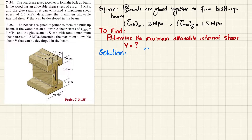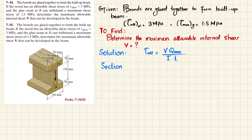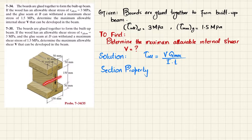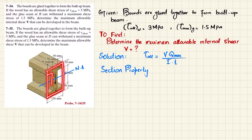Let's start with the solution. The allowable shearing stress formula is τ = VQ_max / (I·t). We will first find the section property I for this beam. The beam is symmetrical about the horizontal axis at mid, so that is its neutral axis. We take the moment of inertia of the full rectangular piece and subtract the moment of inertia of the two hollow sections.